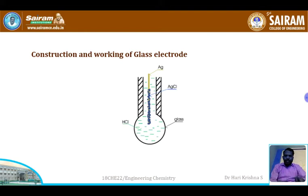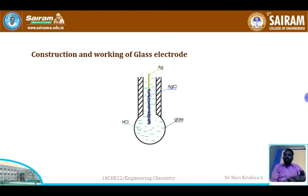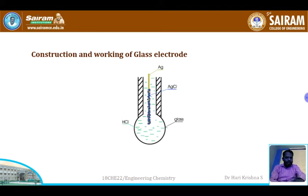The glass electrode is an example of an ion selective electrode. It is made up of a special type of glass with low melting point and high conductivity. The bulb contains a special solution of known pH and concentration — normally 0.1 N HCl is used inside. It also contains a silver-silver chloride electrode which acts as the internal reference electrode.